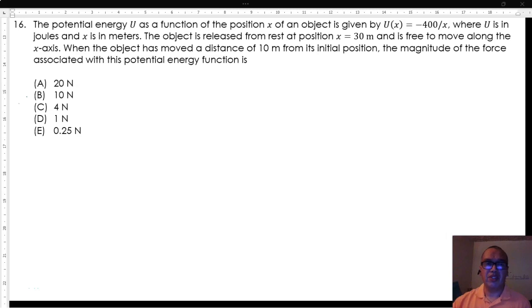The potential energy U as a function of the position x of an object is given by U of x equals negative 400 divided by x, where U is in joules and x is in meters.